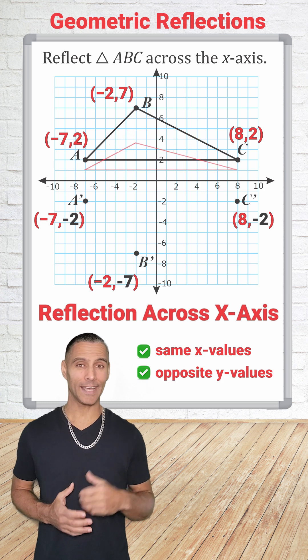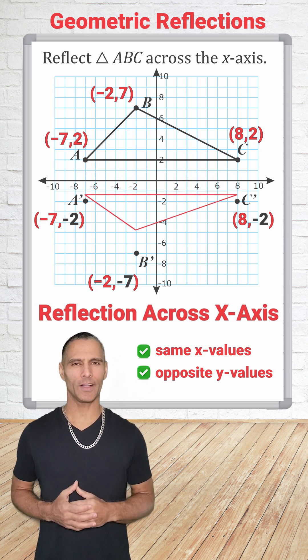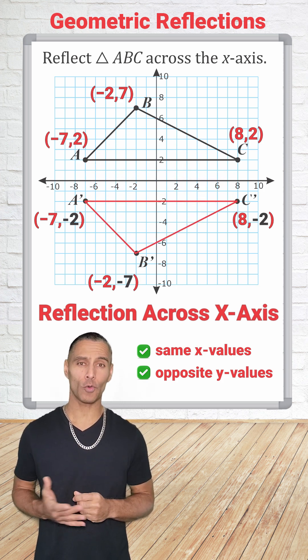Now, if we plot these new points and connect them, we can see that our reflected triangle is a perfect mirror image across the x-axis.